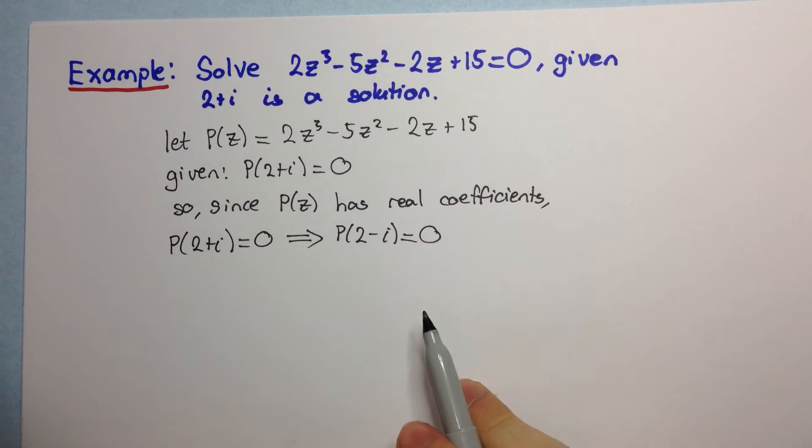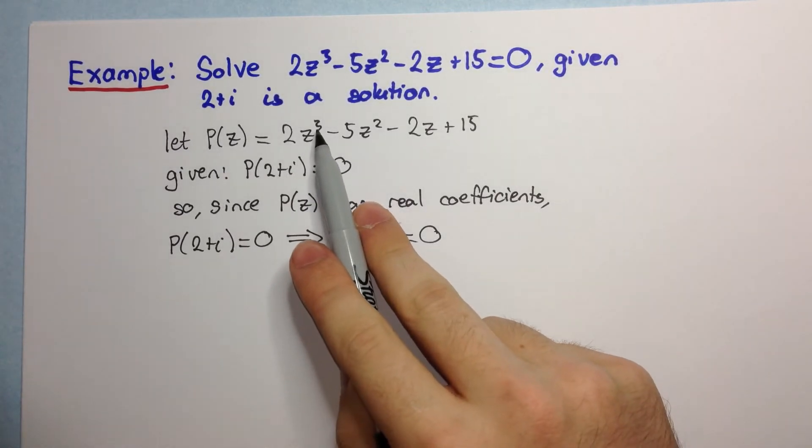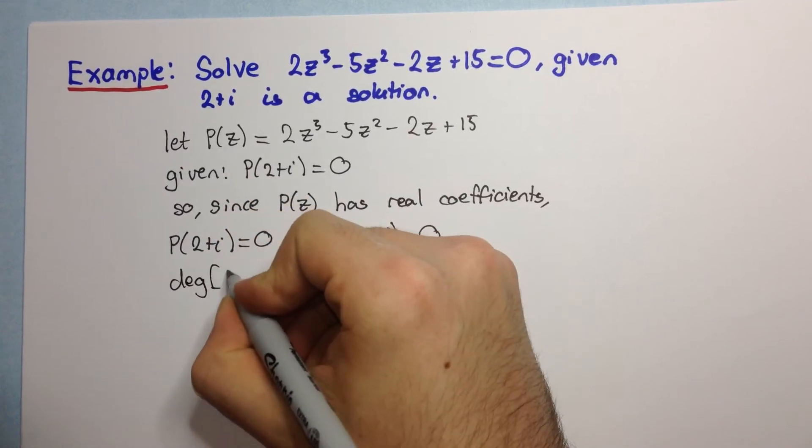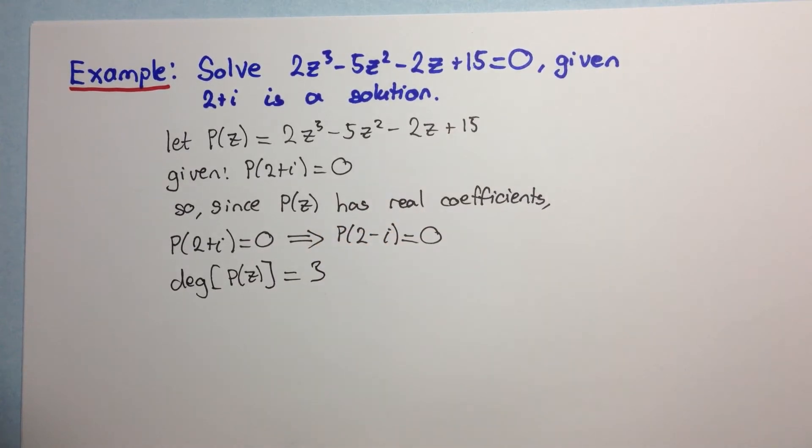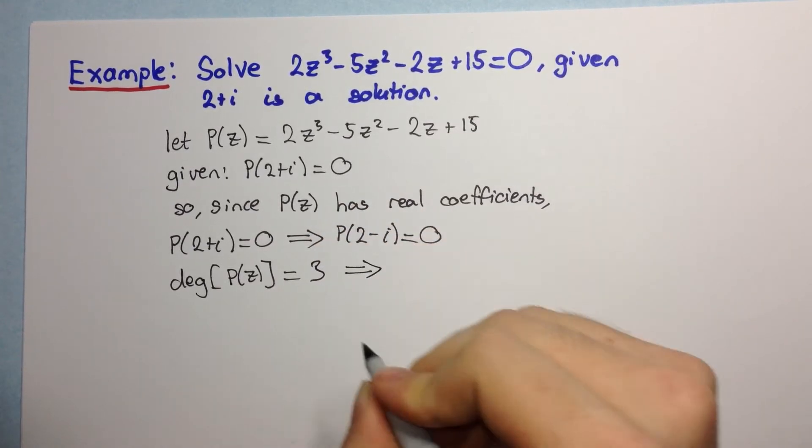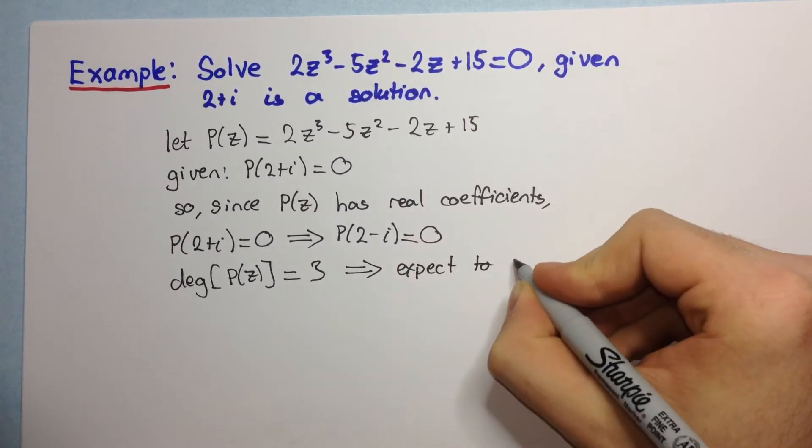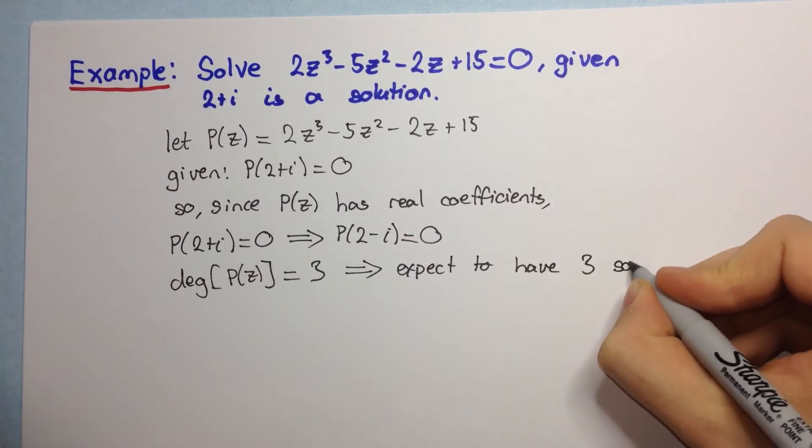Okay, now we look at p of z and we see that it's a degree of 3. So, the notation is degree of p of z is equal to 3. So, from this we can expect to have three solutions.